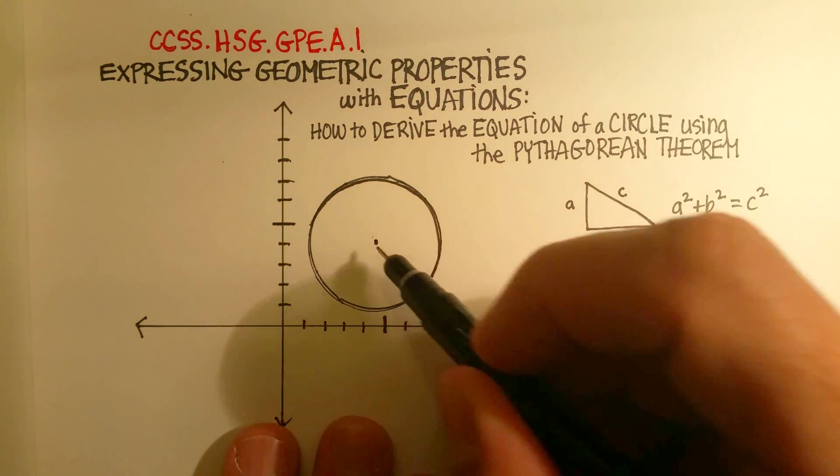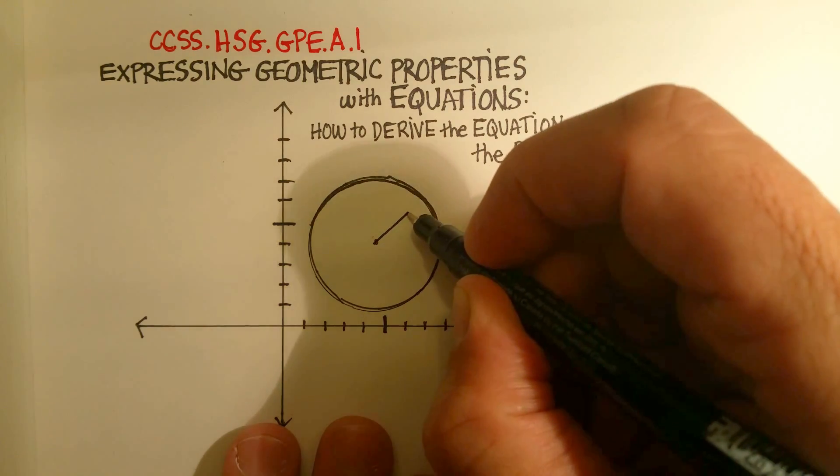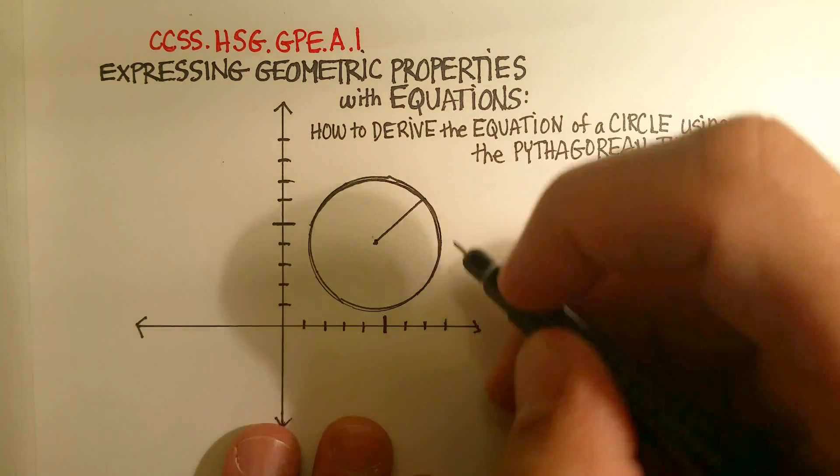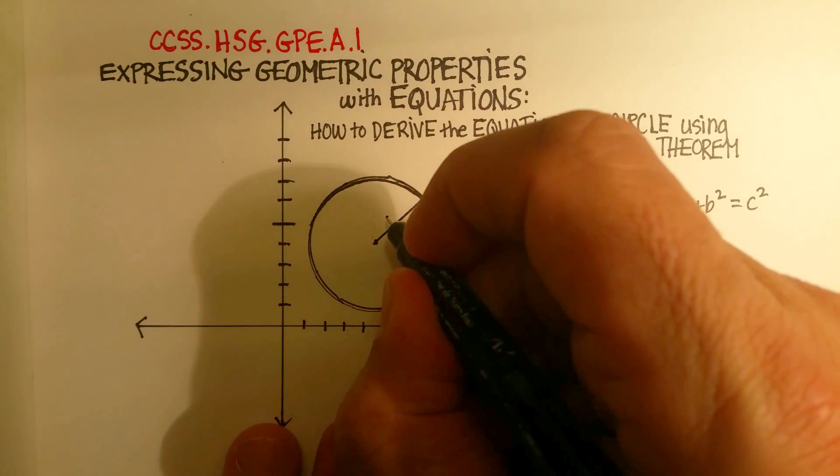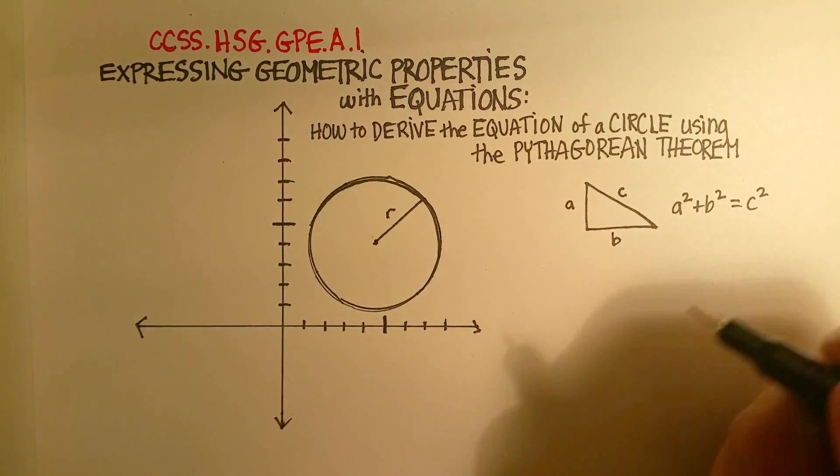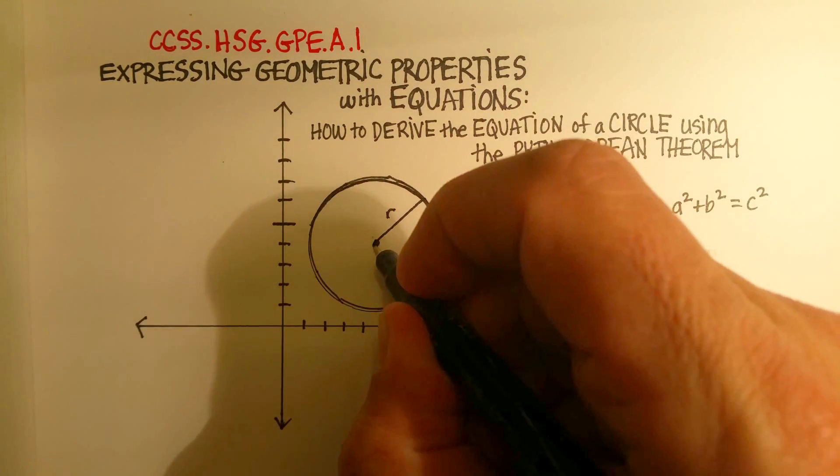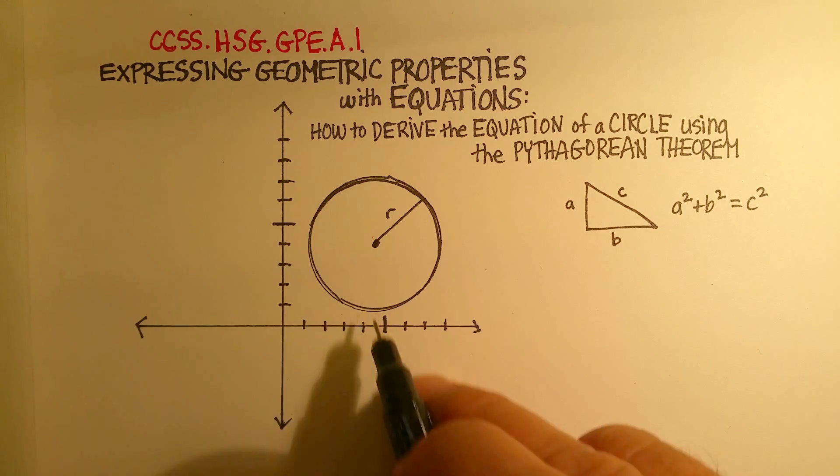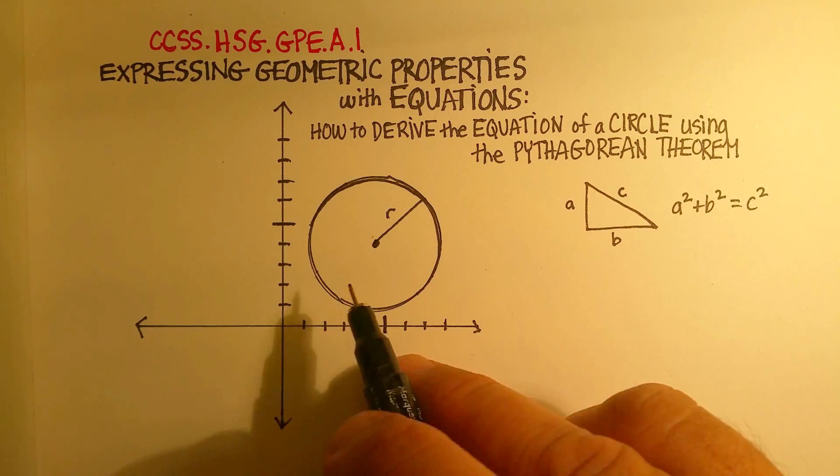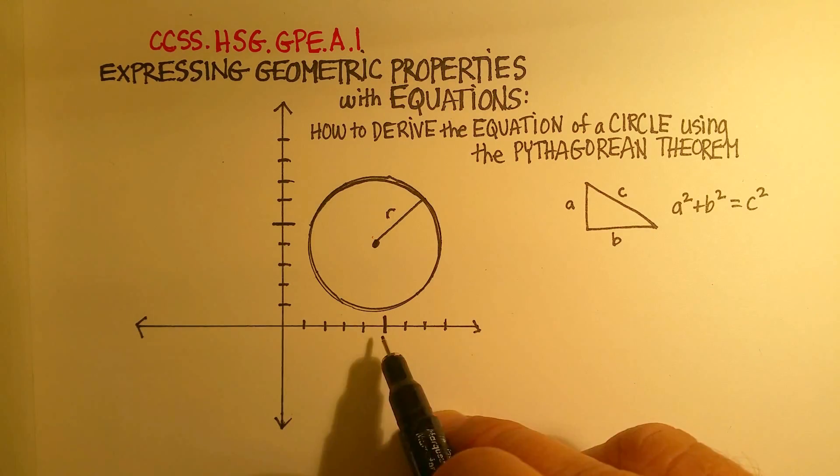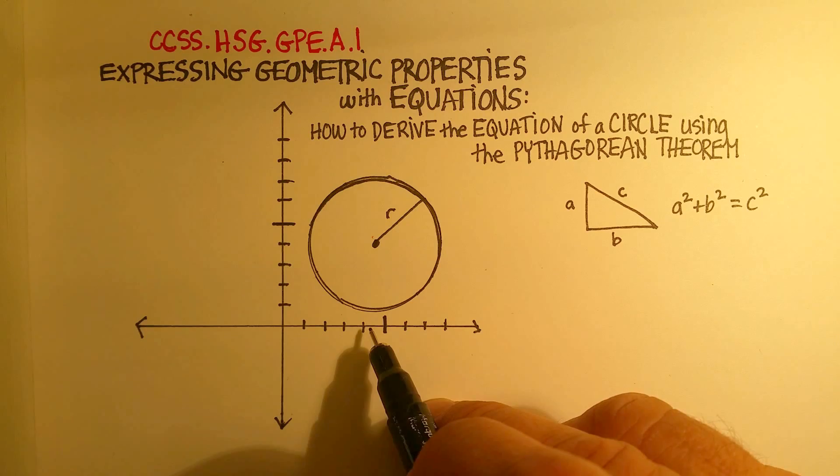the distance from the center to any edge of the circle is always the same—that's called the radius, which we call r. The center point is on an xy-axis and is defined by an x value and a y value.